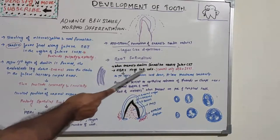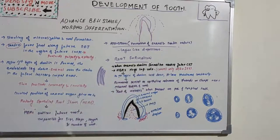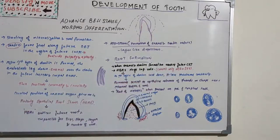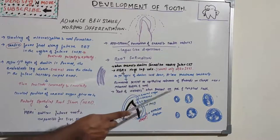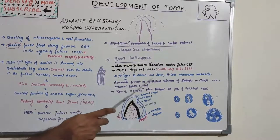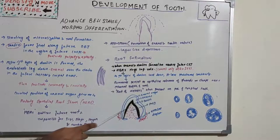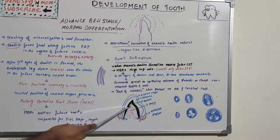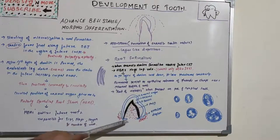HERS plays a very important role and consists only of outer enamel epithelium and inner enamel epithelium. As the first layer of dentine has been laid down, the epithelial root sheath loses its structural continuity and its close relation to the surface of the root.